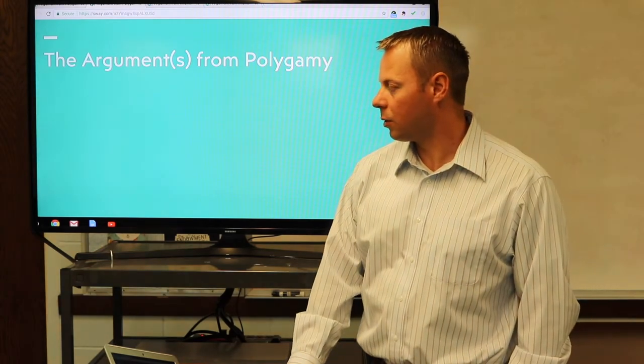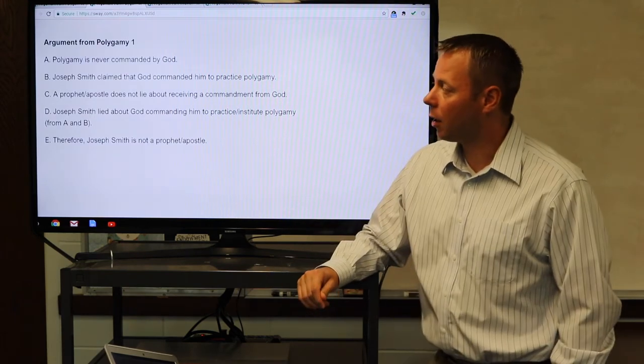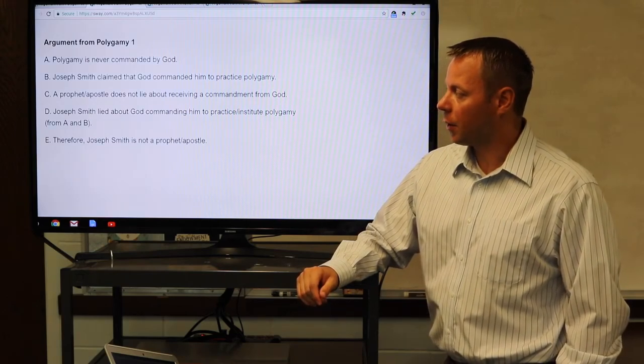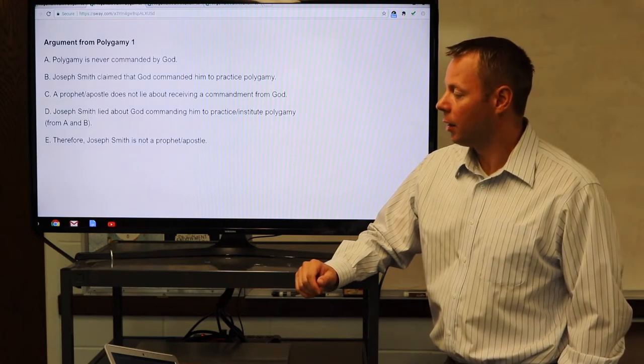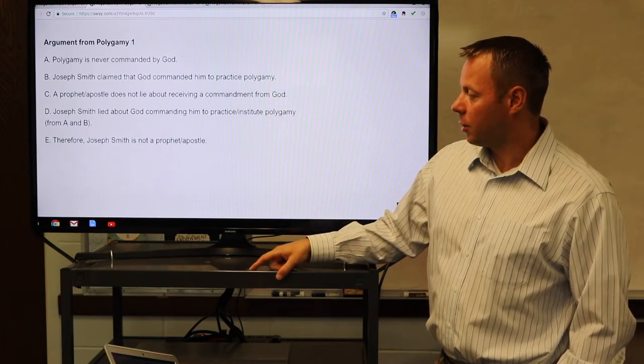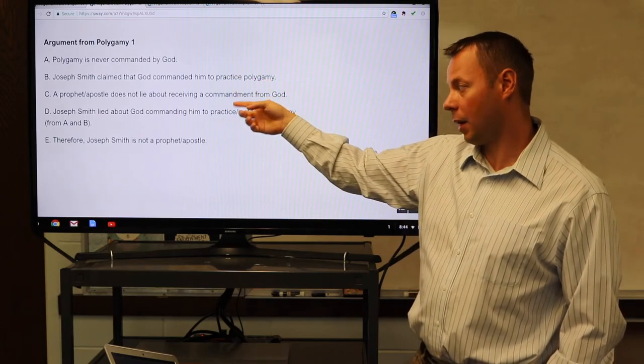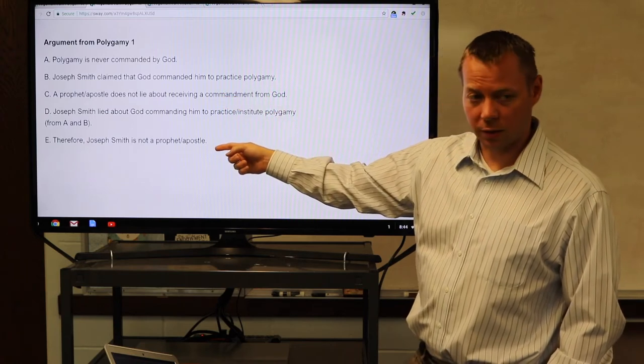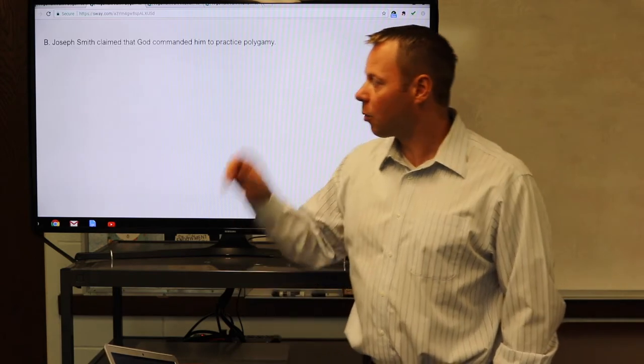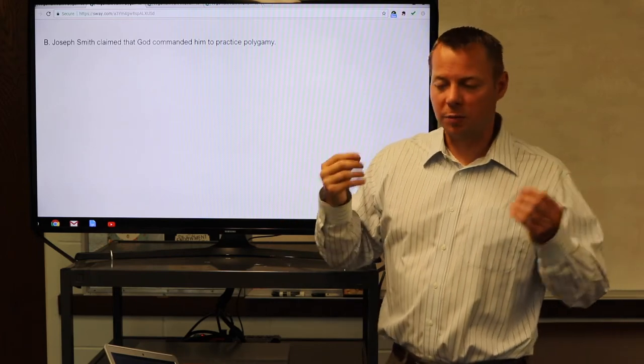There are two or three arguments we'll cover from polygamy. Here's the first one. Premise A: Polygamy is never commanded by God. Premise B: Joseph Smith claimed that God commanded him to practice polygamy. Premise C: A prophet or apostle does not lie about receiving a commandment from God. Therefore, Joseph Smith lied about God commanding him to practice or institute polygamy. If God never commands it and he claimed it, then he was lying. If he lied, he cannot be a prophet or apostle. Therefore, Joseph Smith is not a prophet or apostle.